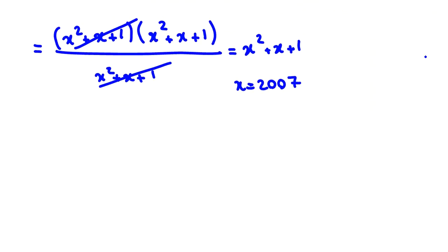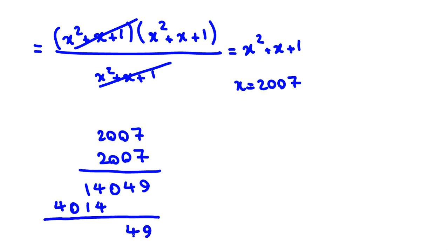Now the only thing we should do is multiply 2007 by itself. 7 times 7 is 49. We have 4, 7 is 14. 0 here, this 0 here, 2 here. 2 times 7 is 14. We have 1. And 2 times 0 is 0. 2 times 2 is 4. So it will be 4,028,049. So it is x squared.